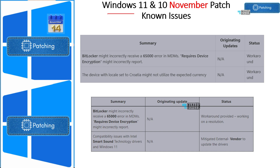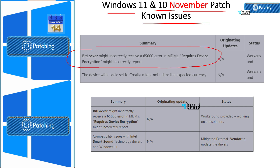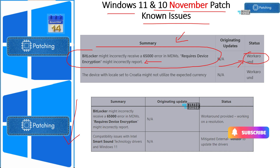Now let's look into Windows 11 and Windows 10 November Patch Tuesday known issues — issues which are not yet fixed. There are some issues with BitLocker error 6500 requiring device encryption. This is an incorrect report and it has not been fixed with these patches. There is a workaround available, so if you are impacted, you can refer to the link in the description. Microsoft has not fixed this issue with November Patch Tuesday.